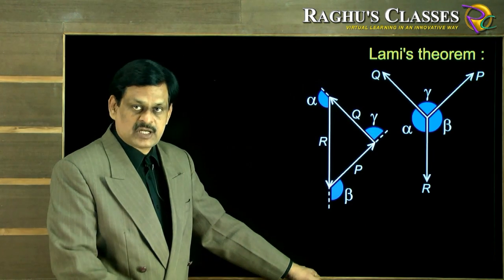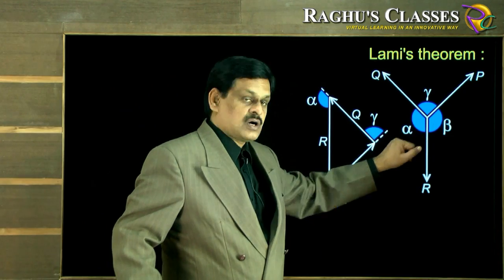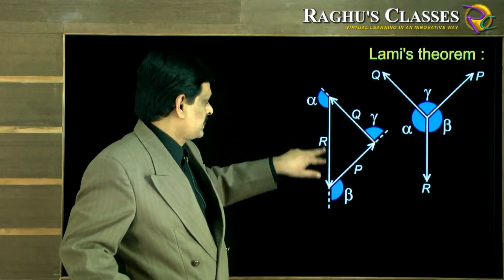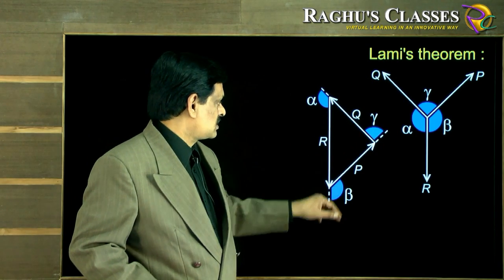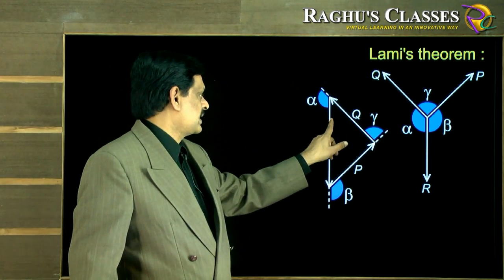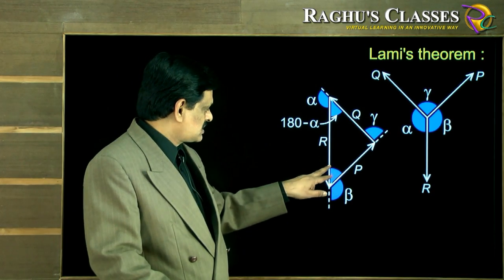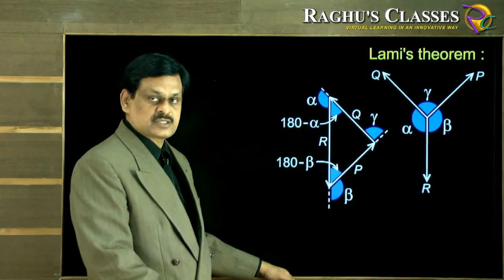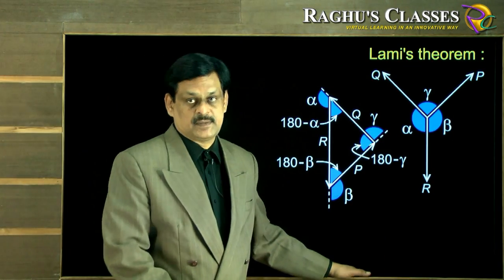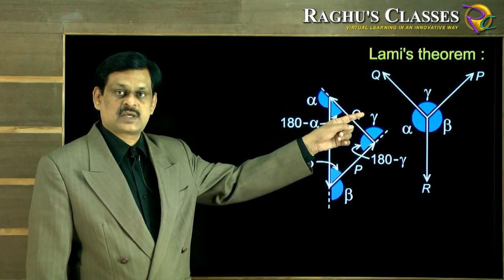While drawing the triangle of forces, the angles between the forces become external angles of the triangle. The internal angles are therefore 180 minus alpha, 180 minus beta, and 180 minus gamma for the respective vertices.